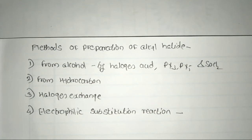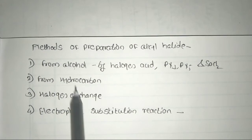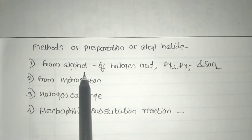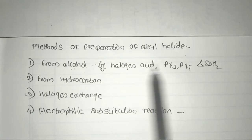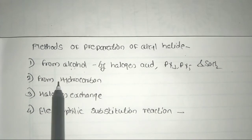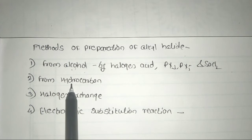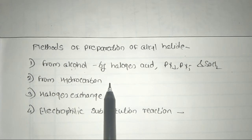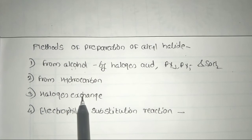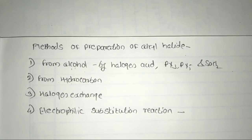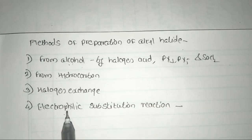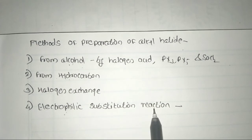Hello students. In the last lecture we studied three methods of preparation of alkyl halides. The first method: alkyl halides prepared from alcohols using halogen acid, phosphorus trihalides, phosphorus pentahalides, and thionyl chloride. The second method: from hydrocarbons — saturated and unsaturated — according to Markovnikov's and anti-Markovnikov's rule. The third method: halogen exchange, including Finkelstein reaction and Swartz reaction.